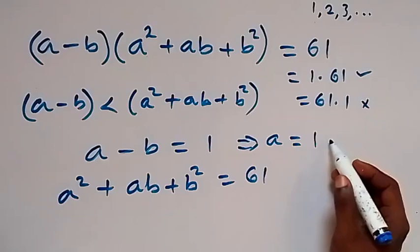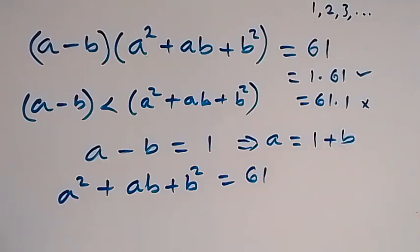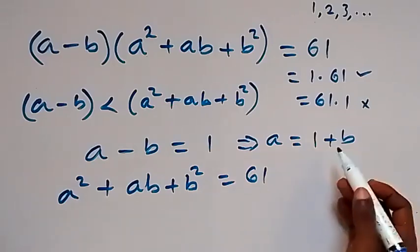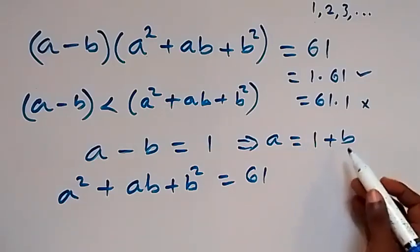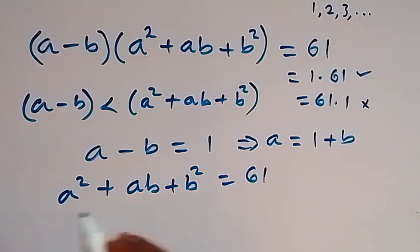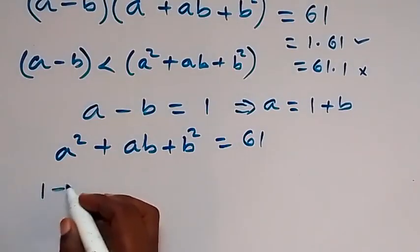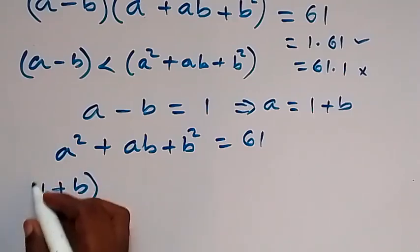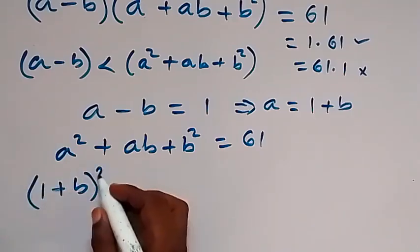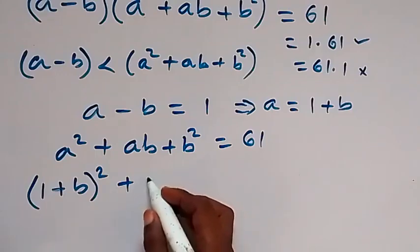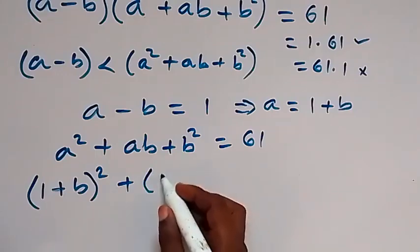From a - b = 1, we make a the subject, so a equals 1 plus b. Let's substitute a = 1 + b into the equation a² + ab + b² = 61. This becomes (1 + b)² plus (1 + b)·b plus b² equals 61.